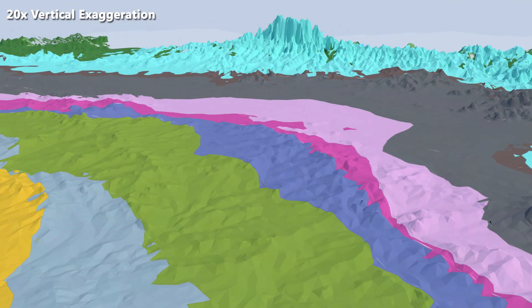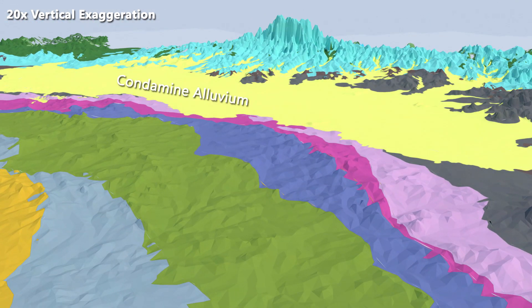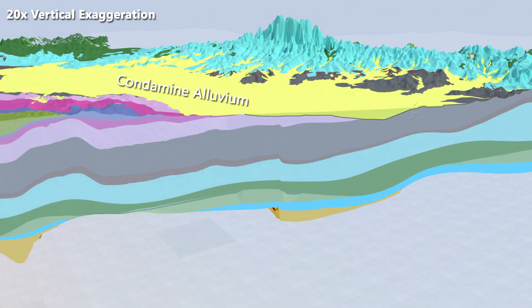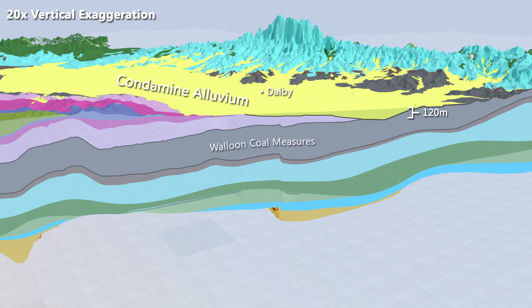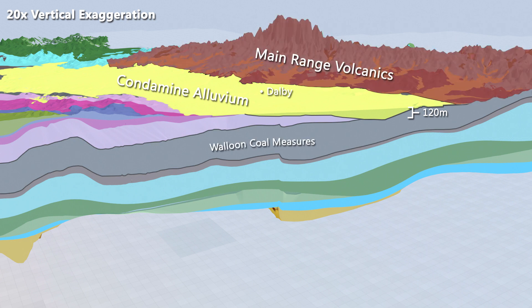At the south-eastern end, the Condamine Alluvium is about 120 metres thick in the central flood plain near Dalby, and sits on top of the Surratt Basin and its equivalent, the Clarence Morton Basin. In the east, the Walloon Coal Measures lies directly underneath it. Next to this is the basalt layer of the main range volcanics.